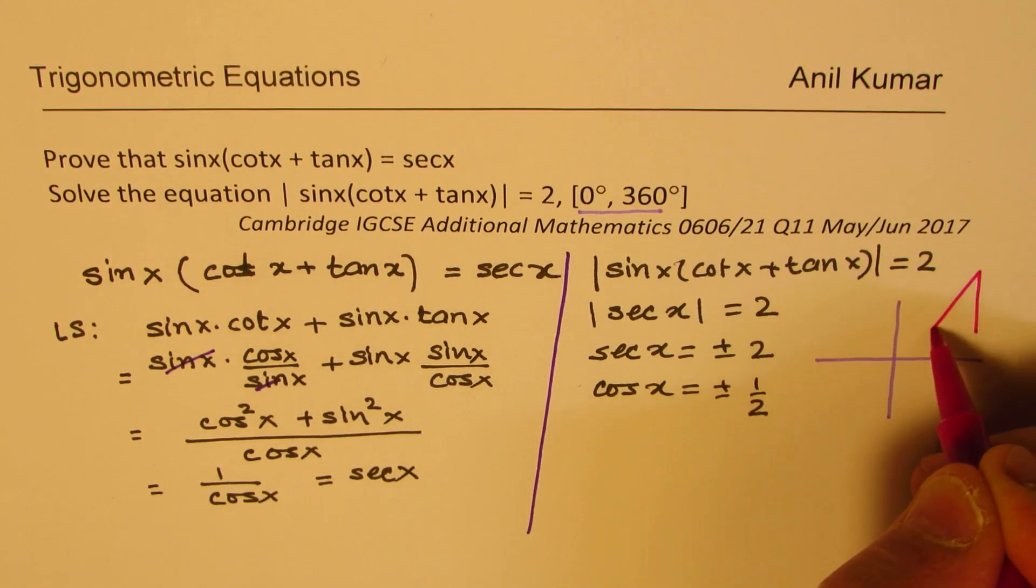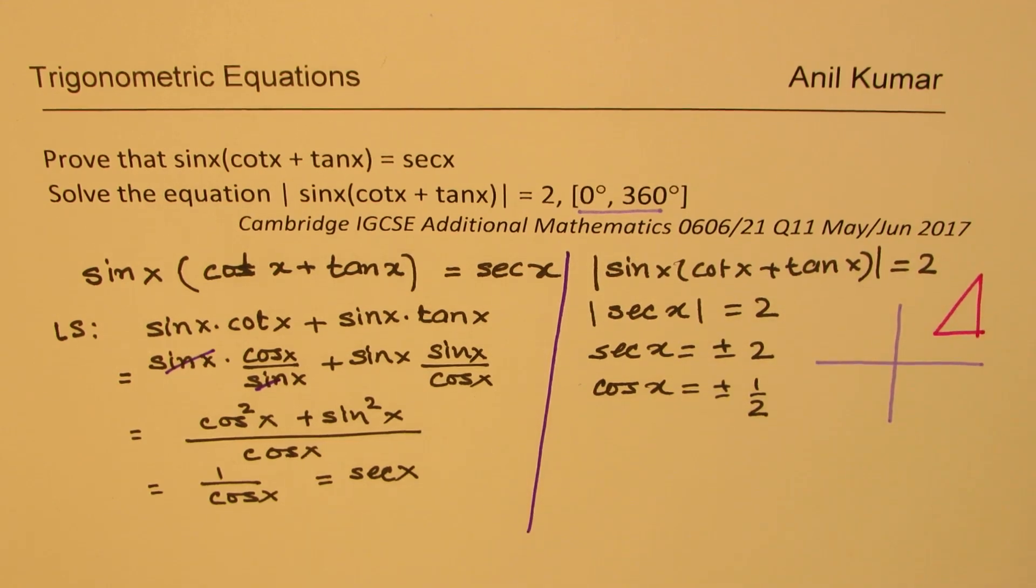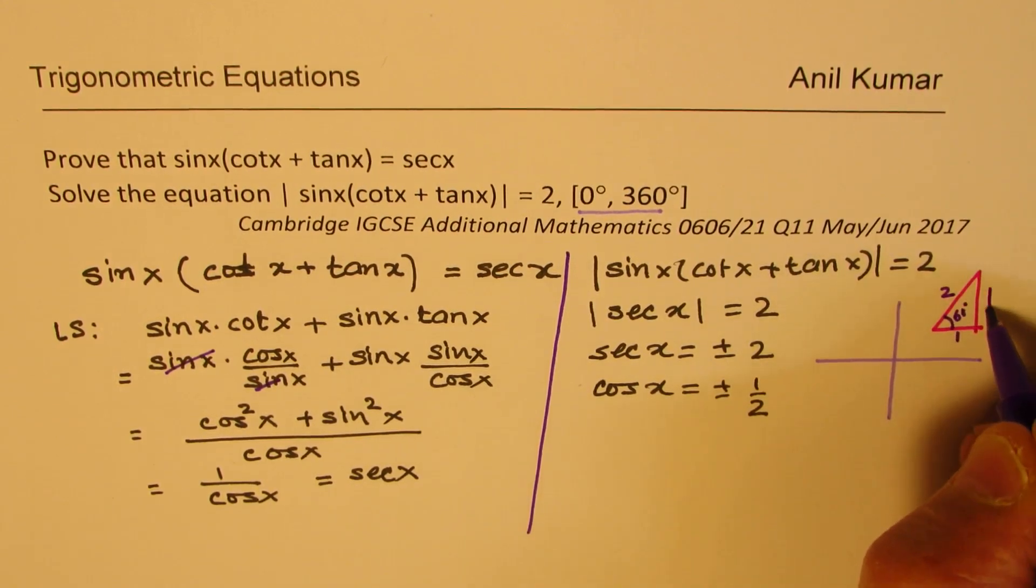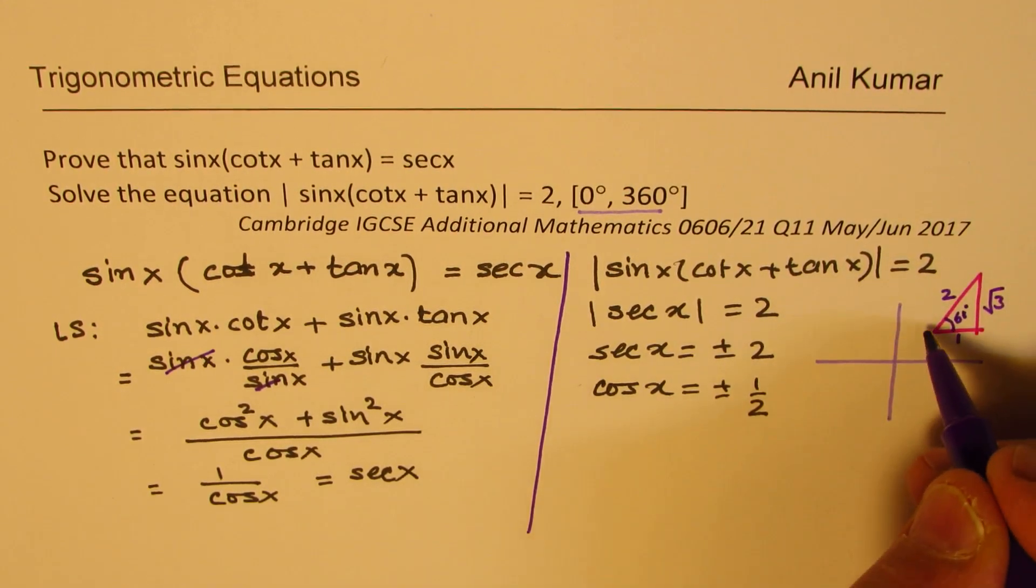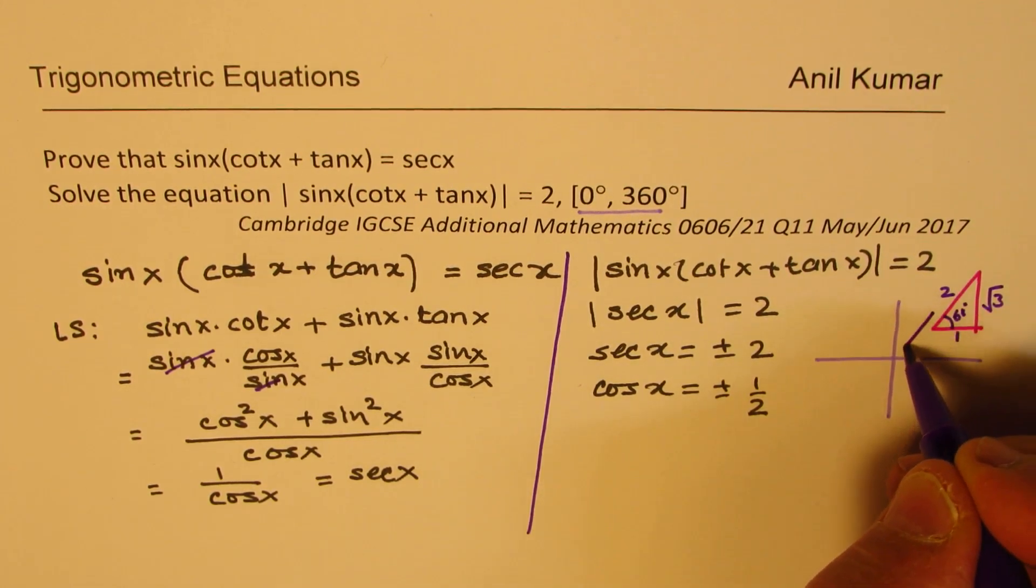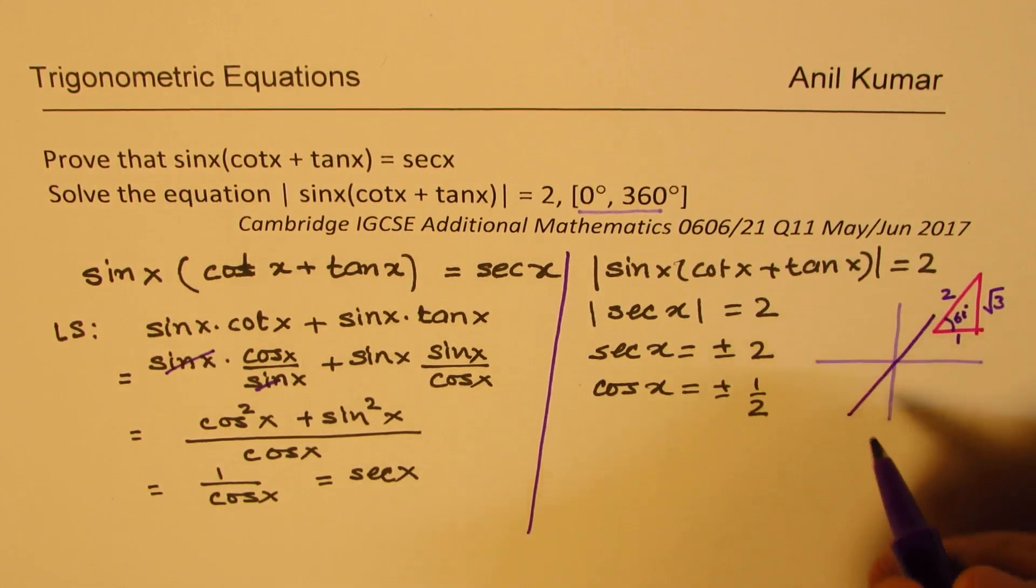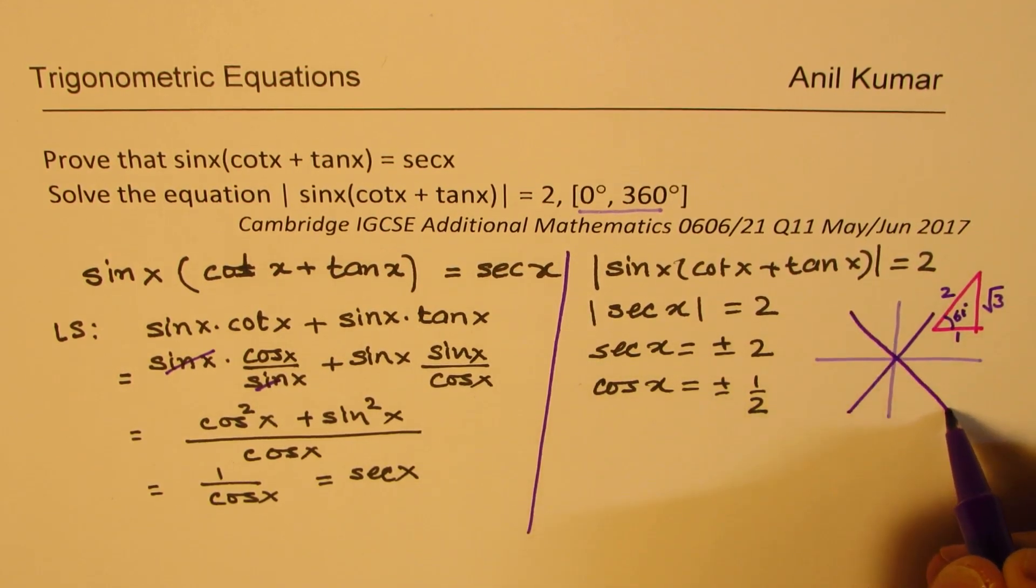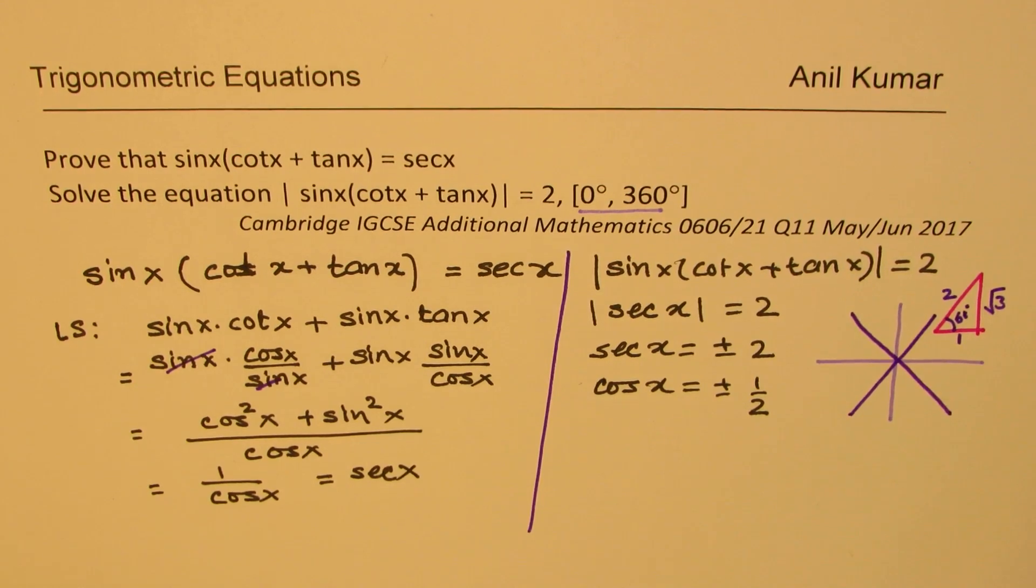So we know from right triangles that cos x is half for 60 degrees. So if this is 60 degrees, then we have 1 over 2. That is the value of cos x. So that could be one solution, these two positive values. So we have 4 solutions here.